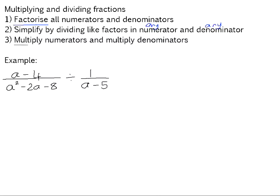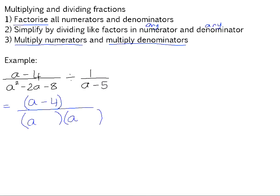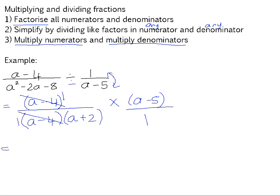Then we multiply what's left in the numerator and the denominator. For example, we factorize: (a − 4) is already prime, so we put it in brackets. a² − 2a − 8 is a trinomial that factorizes into (a − 4)(a + 2). We change the divide to a multiply and flip the second fraction, so (a − 5) goes to the numerator and 1 to the denominator. We then cancel (a − 4) with (a − 4), leaving (a − 5) in the numerator and (a + 2) in the denominator.